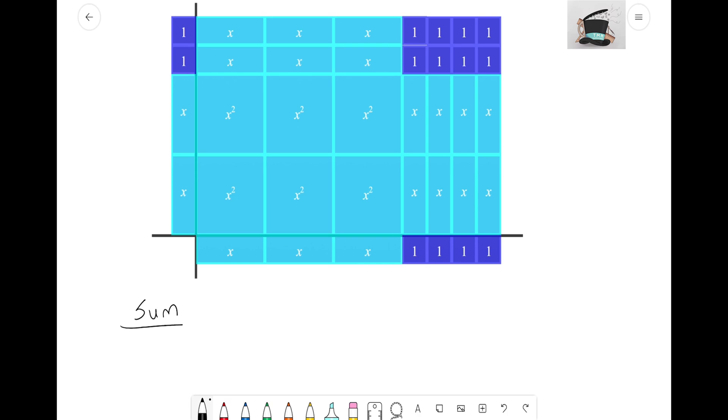All of the algebra tiles that we see here in this original rectangle. Looking here at my x squared tiles, I see that we had six x squared tiles there, so I'm going to write that out as 6x².